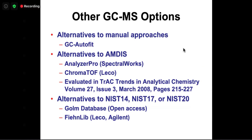We've shown how to do GCMS analysis using AMDIS, but it's still a very manual process. We've been working to make it automated with GC AutoFit. Other tools include Chromatof, Analyzer Pro, and AMDIS itself. There are also other GCMS databases: the GOLD database maintained in Germany focused on plants, and Oliver Fiehn's library sold through Leco and Agilent — not as large as NIST but good alternatives.